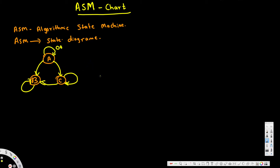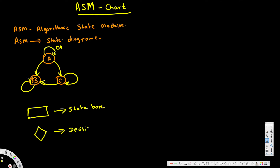First we are going to see the box types. This is called the state box. We will also have a decision box, and this one is the conditional output box.